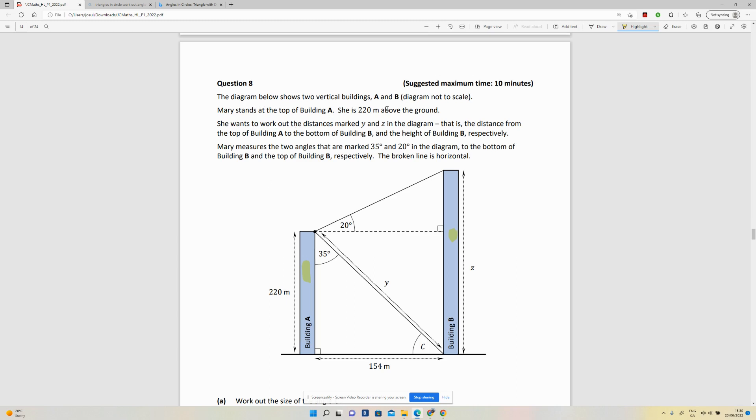She's 220 meters above the ground. She wants to work out the distance marked y and z in the diagram. That is the distance from the top of building A, so that's building A there, to the bottom of building B. So they want to calculate how long that line is.